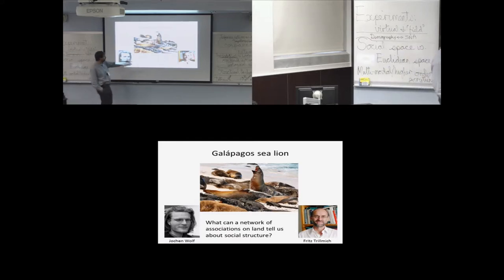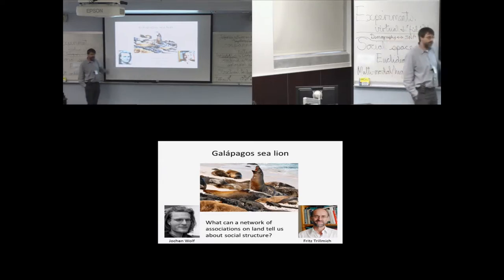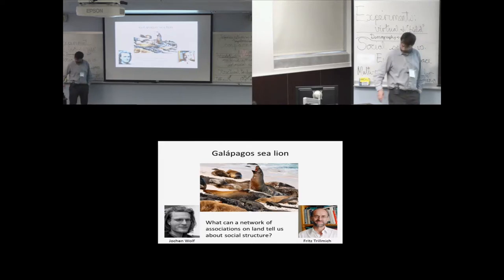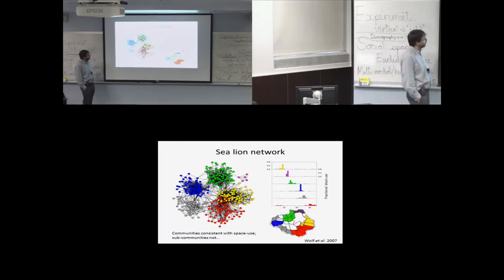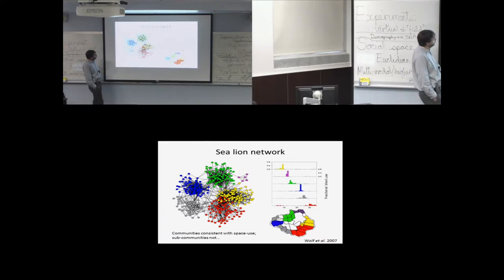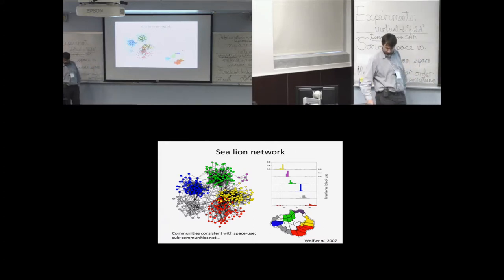Another example, he's pretty hairy as well now I think of it. These guys are interested in the Galapagos sea lion. Pretty hard to see these things underwater but we can see where they haul out on the beach. Can we tell anything from who they haul out with about what might be driving some of the social structure? So again, build these gambit of the group networks. In this case, look for communities which are driven by or consistent with space use. But within these, there's almost certainly some sub-communities, and the sub-communities are hard to explain so that's a kind of fun thing because it makes you go back to your system and try and work out what's driving that.